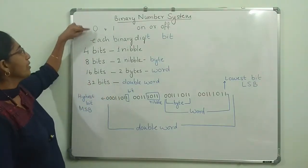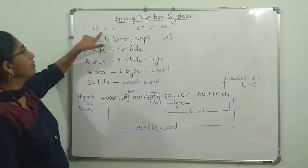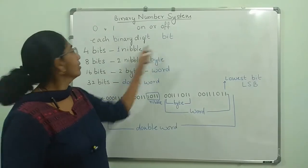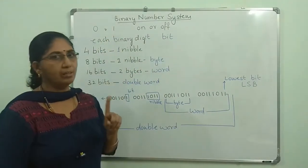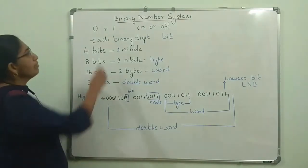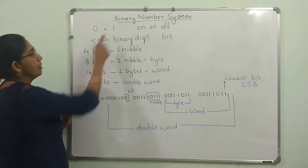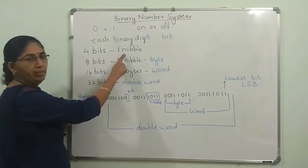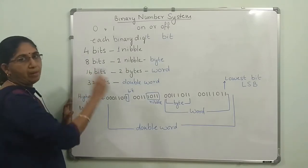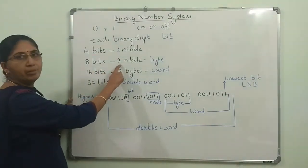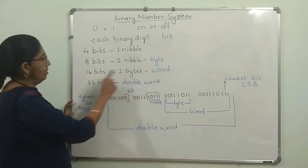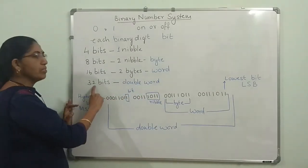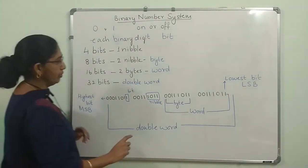In binary, each number 0 or 1 is called a binary digit, or bit — one single unit is called a bit. If I combine four such units together, that means four bits form a nibble. If I have eight bits in a number, it will form two nibbles or one byte. 16 bits, or two bytes, will form a word. 32 bits will give a double word.